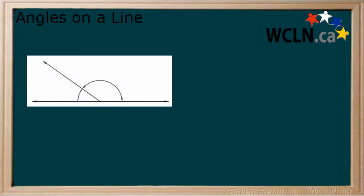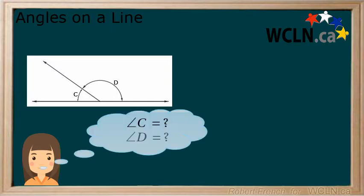Here, we have a straight line that is split in two by angles C and D. We may not know what angles C and D are, but we can say that angle C plus angle D add to 180 degrees.